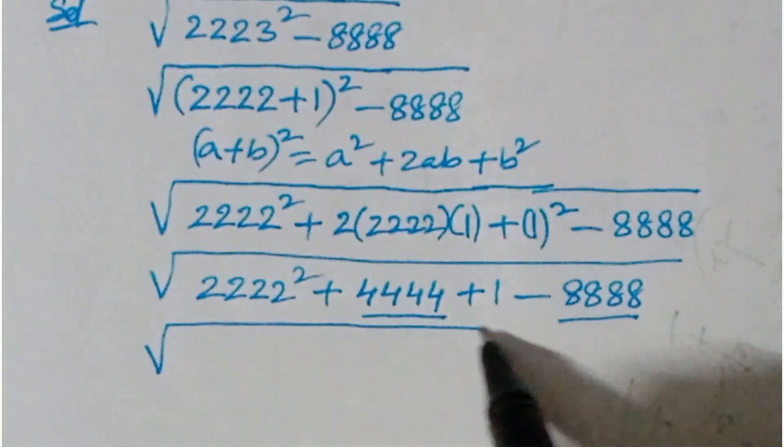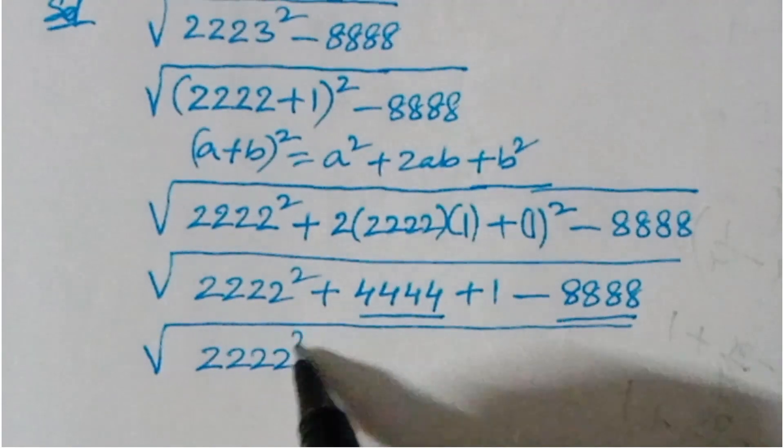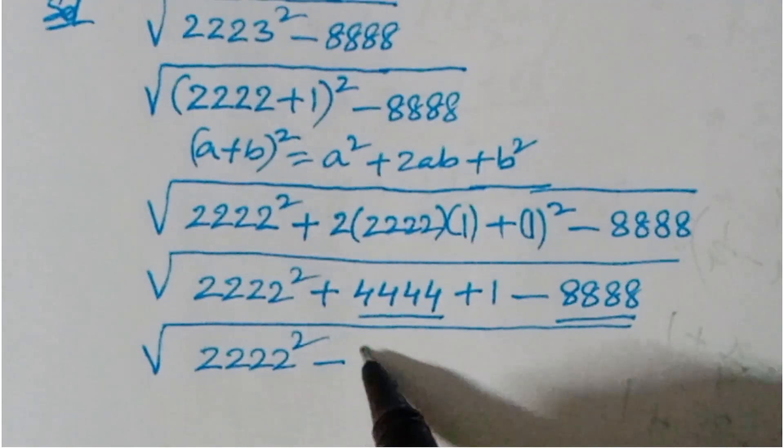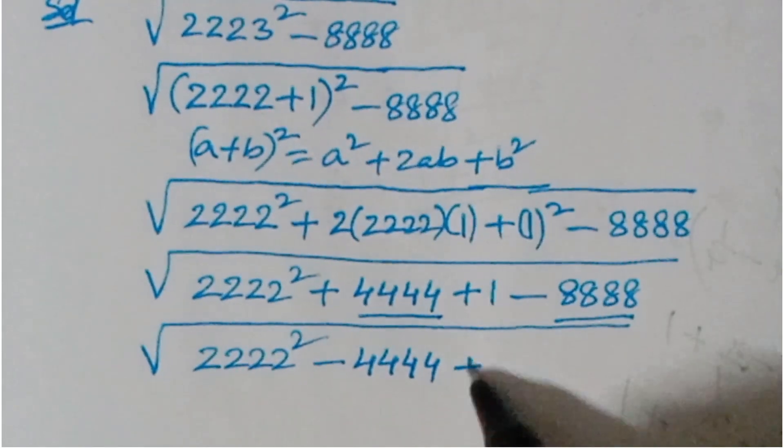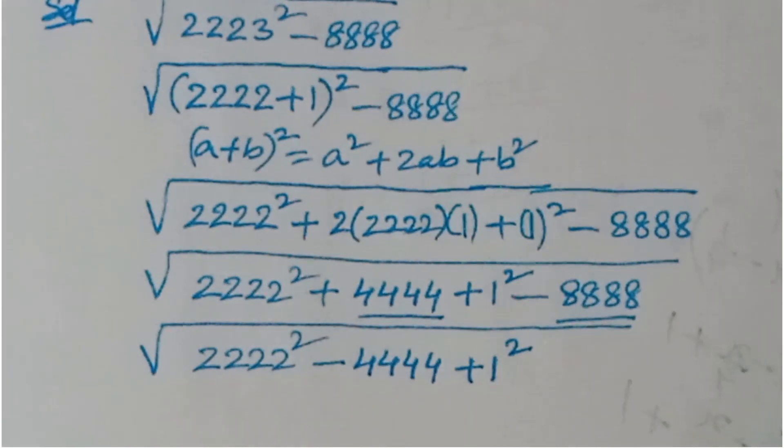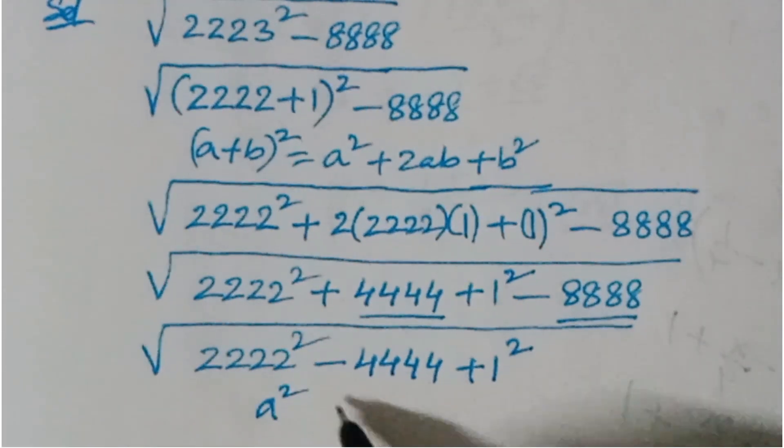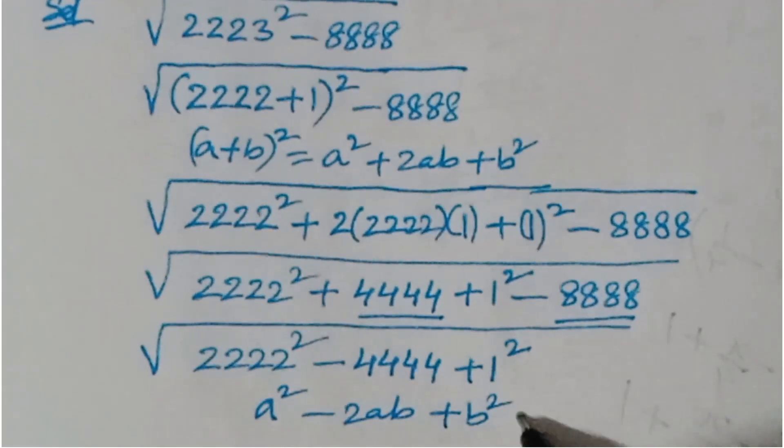Now if you solve this, if you subtract these two values, so here what you'll get here: 2222 whole squared minus 4444 plus 1. Now you can write it as 1 squared. So again here we are getting one formula: a squared minus 2ab plus b squared, that is a minus b whole square.